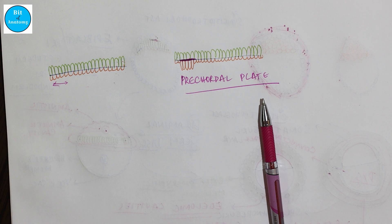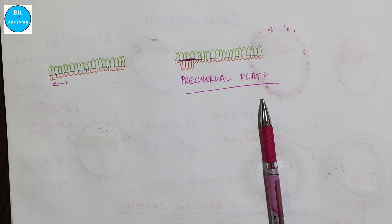In the next video, we will see the changes that occur in the third week — how this bilaminar germ disc gets converted into a three-layered or trilaminar germ disc. We will see this in the next embryology tutorials video, so do subscribe for future updates. Thank you.